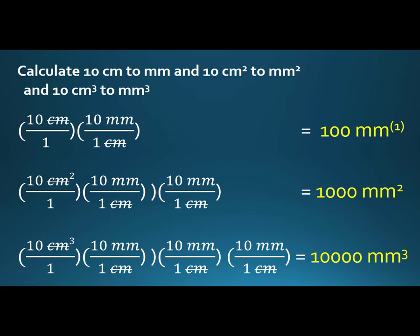To do cubed, we do the same thing—we just add another one centimeter per 10 millimeters, and it's 10 times 10 times 10 times 10, which makes 10,000 millimeters cubed.